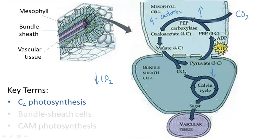There are two different parts of the leaf in which these cycles occur called the mesophyll cells and the bundle sheath cells. The bundle sheath cells are tightly packed cells around the center of the leaf surrounding the vascular tissue.